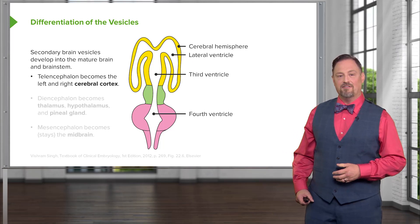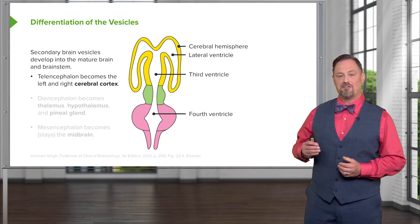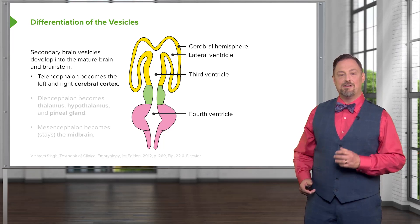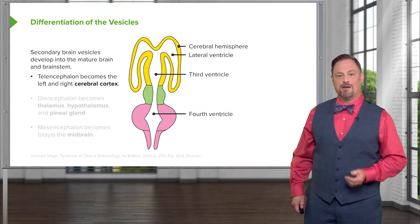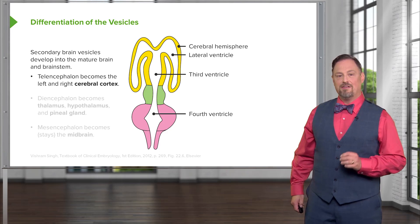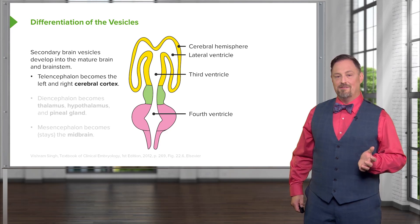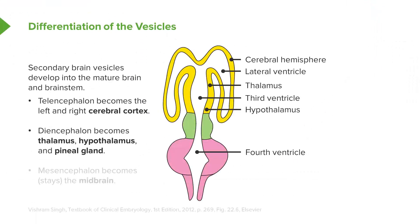The telencephalon is the developing cerebral cortex, and because we have a large left and right cerebral cortex, we have large lateral ventricles within them. Within the diencephalon, which is going to be the developing thalamus, we're going to have the third ventricle, with the hypothalamus and thalamus forming on either side of it.